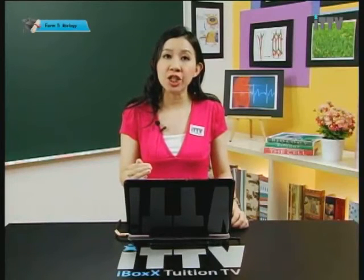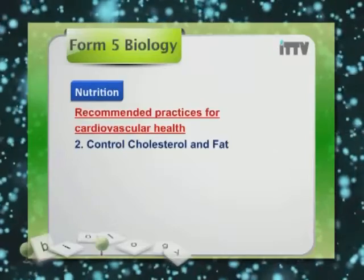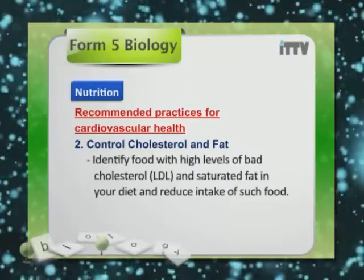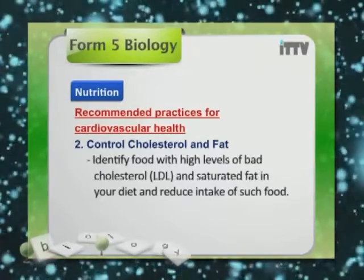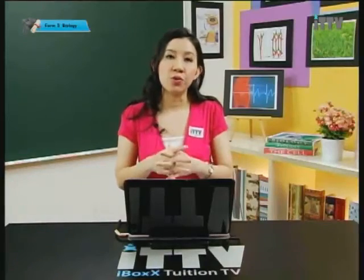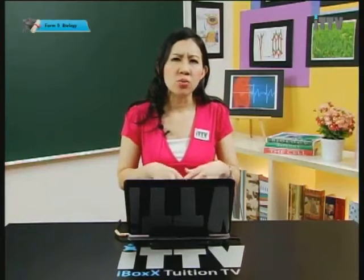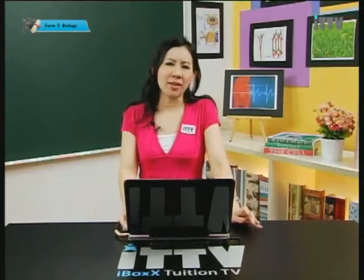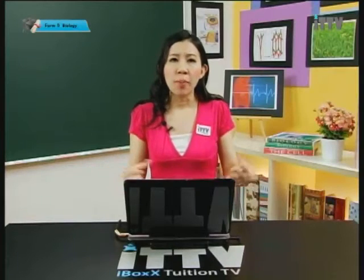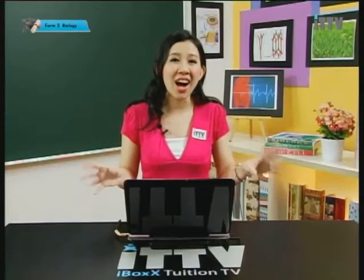The second recommended practice is to control cholesterol and fat. Identify foods with high levels of bad cholesterol — LDL and saturated fat — in your diet and reduce intake of such foods. It is not about avoiding cholesterol entirely, but controlling it, as we need small amounts. Foods with high fat content tend to taste better — like chocolates and cakes — compared to healthier options like oats, wheat germ, brown rice, and brown bread, which are great for our cardiovascular system and our waistline.